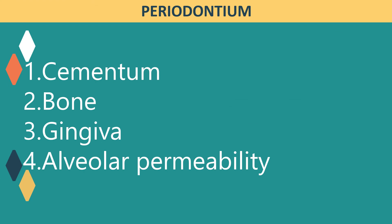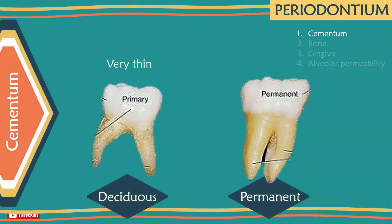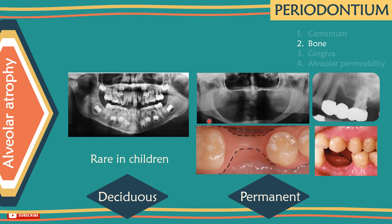Last but not least, let's compare the periodontium. Number 1 – Cementum: it is very thin and of the primary type in the deciduous dentition. Number 2 – Bone: alveolar atrophy is rare in children because it happens mostly when there is absence of teeth. Children's arches are full of teeth and tooth buds, which is why alveolar atrophy is more common in adults, especially after tooth loss.